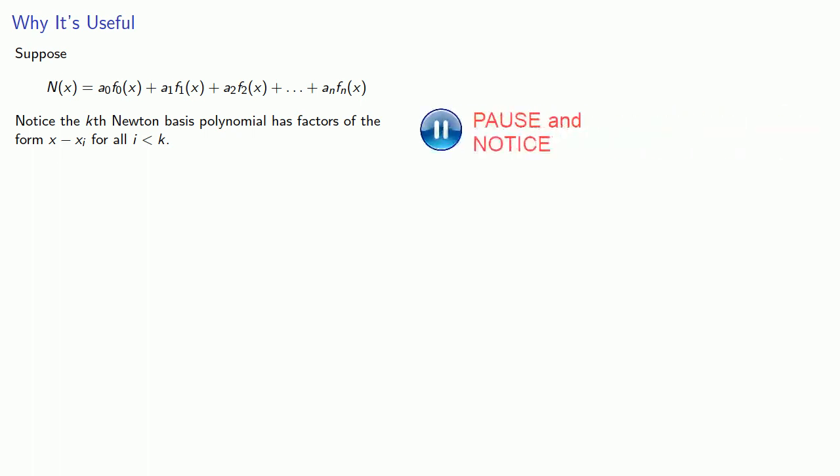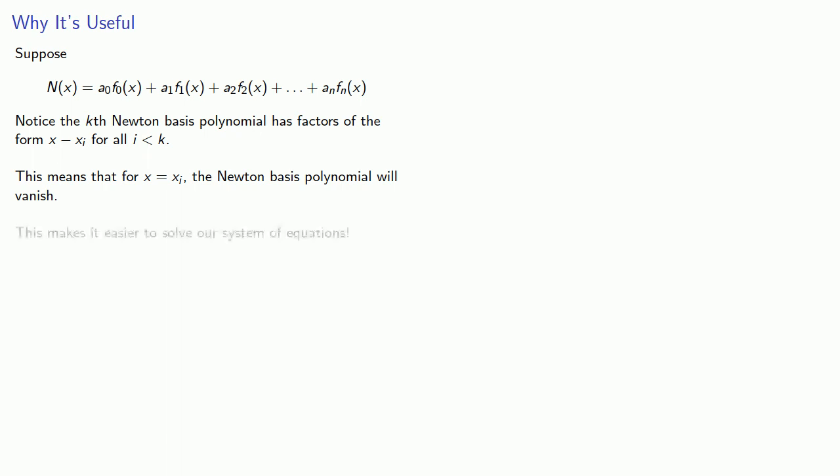Now you might wonder why we have what seems to be a very roundabout way of finding this interpolating polynomial. Well suppose N(x) is our Newton polynomial. Notice that the kth Newton basis polynomial has factors of the form x minus xi for all i less than k. And what this means is that for x equal to xi, the Newton basis polynomial will vanish. Its value will be zero. And this actually makes it much easier to solve our system of equations.